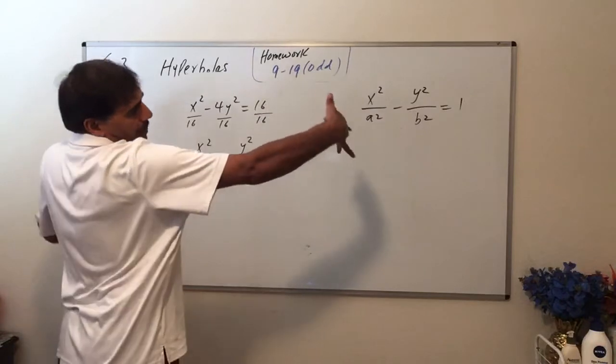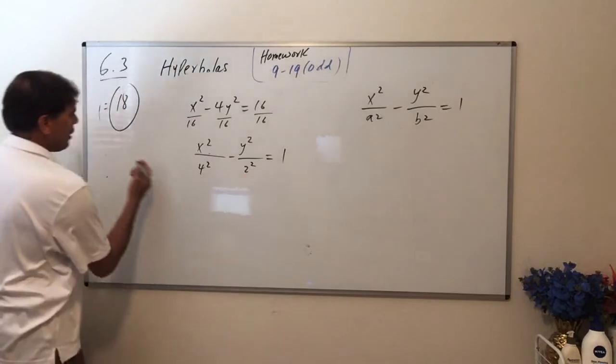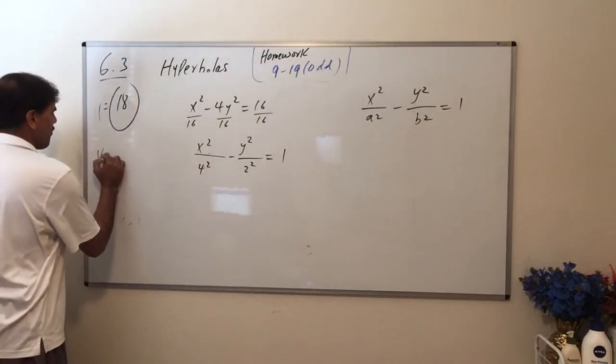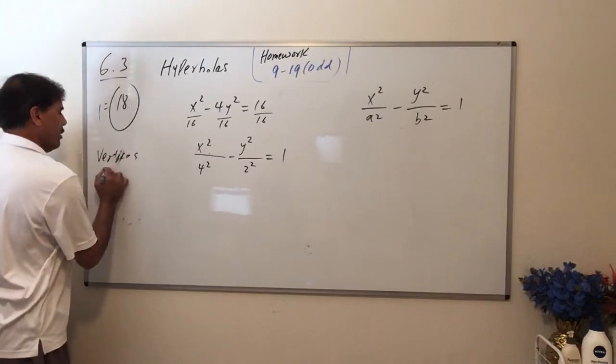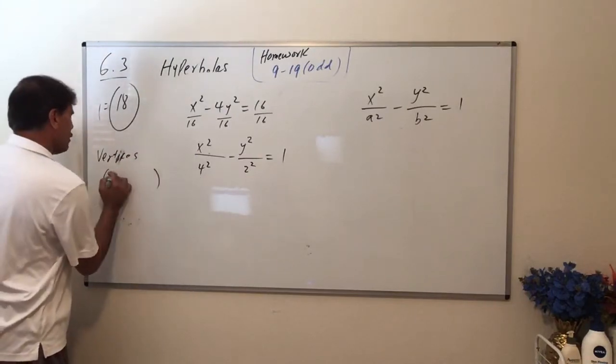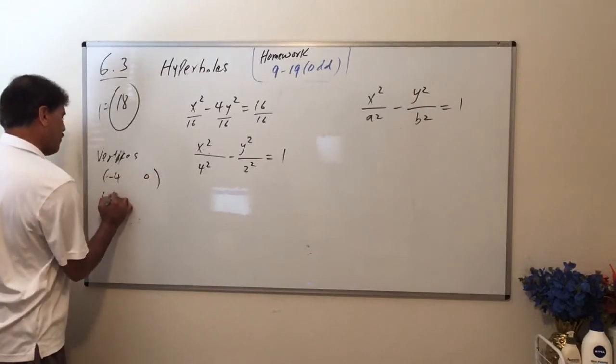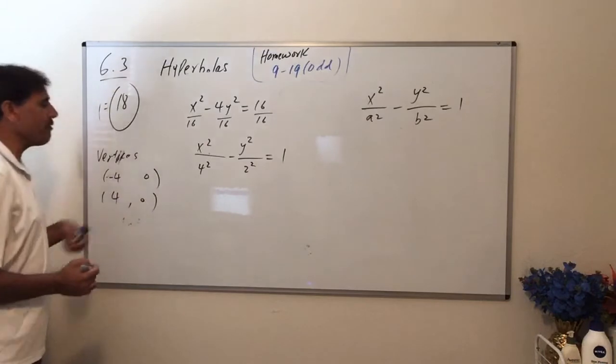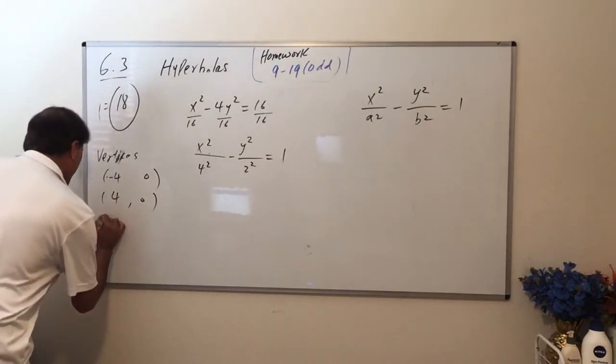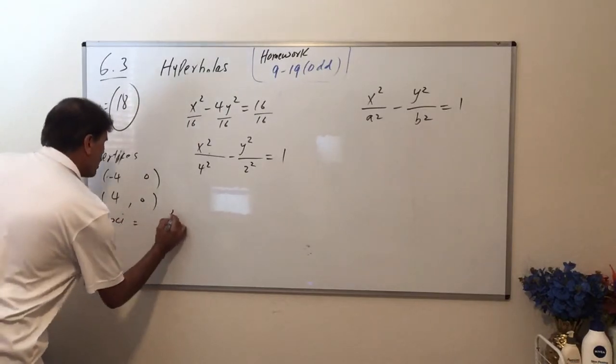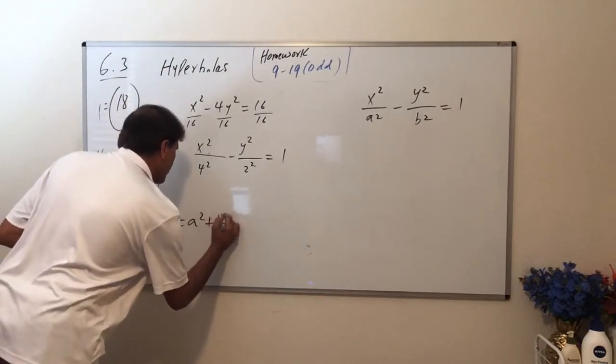So here are the vertices. This is a, so negative 4 comma 0 and 4 comma 0—that's your vertices. And the foci are going to be, so this is c² equals a² plus b². So c² equals 16 plus 4, which is 20.